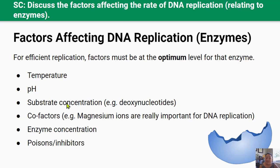Substrate concentration: an increase in substrate concentration means more substrate can combine with an enzyme's active site and increase the rate of reaction, until all the enzyme molecules become saturated and the rate of reaction levels off. In the case of DNA replication, some of the most important substrates are the deoxyribonucleotides — the free nucleotide bases joined together to create the new daughter strands of DNA. Cofactors and coenzymes like magnesium ions can alter the shape of the enzyme's active site so it can effectively combine with substrates. A decrease in these cofactors like magnesium would reduce the rate of reaction or even stop the enzyme from working altogether.